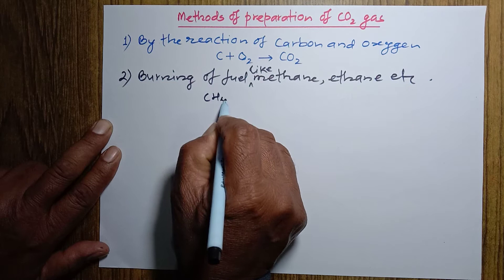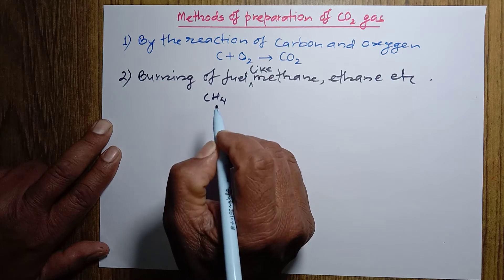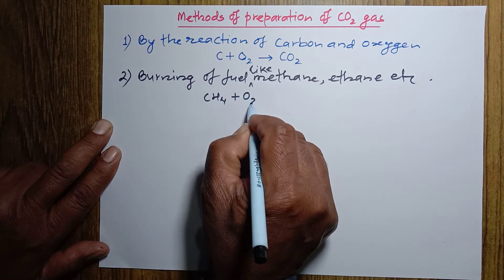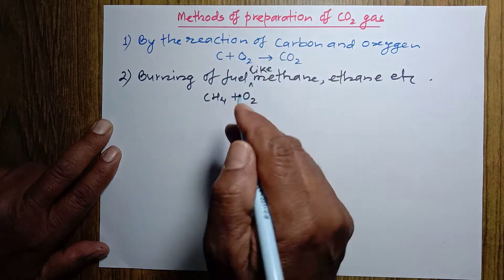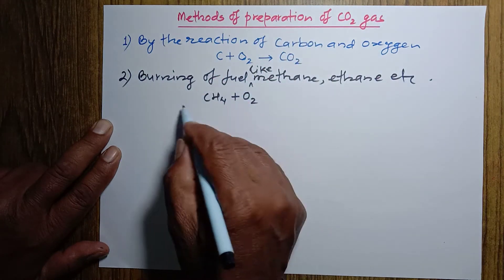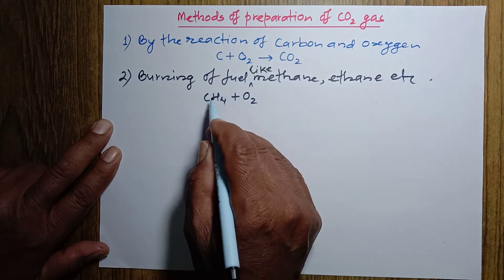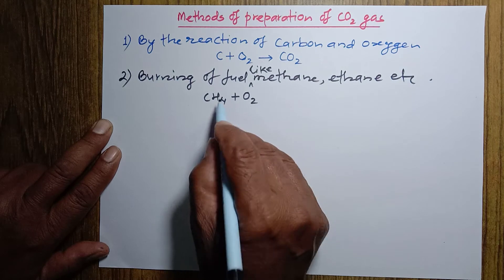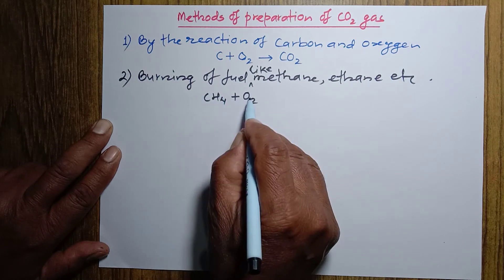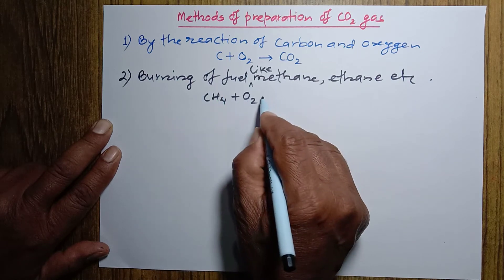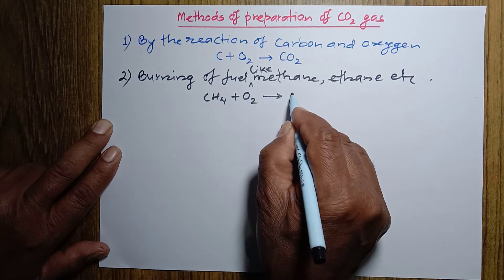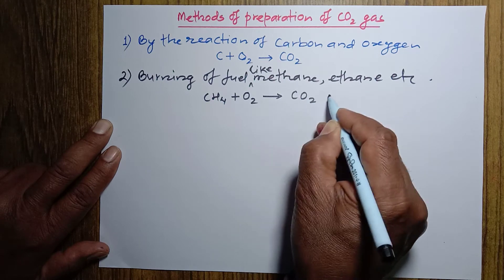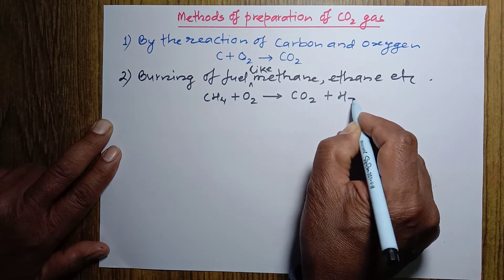Just for example, methane's molecular formula is CH₄. When methane reacts with oxygen — burning of anything means the substance which is burning reacts with oxygen — so when methane burns it reacts with oxygen, and carbon dioxide gas produces along with water.